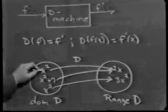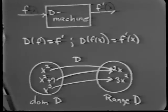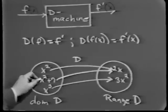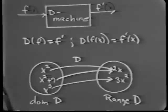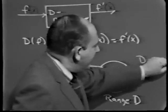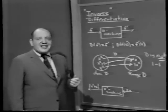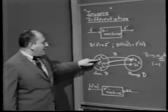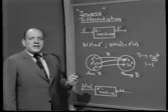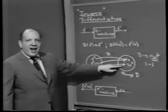Consider: if x squared goes into the D machine, the output is 2x. x cubed maps to 3x squared. But x squared plus 7 also maps to 2x. So without going further, D is not one-to-one — two different functions can have the same derivative. In fact, many different functions can have the same derivative. Once we know the derivative of x squared is 2x, the derivative of x squared plus any constant is also 2x. We cannot make an inverse function machine as things stand.